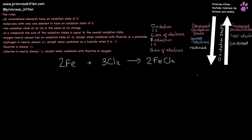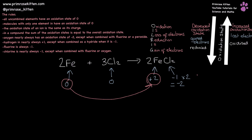Iron on its own is going to have an oxidation state of zero, and chlorine in combination with itself is also going to have an oxidation state of zero. Chlorine over here is minus one and there are two of them giving us minus two overall, making iron plus two. So, you can see that iron has gone from zero to plus two — this has increased its oxidation state, it has lost electrons, it has been oxidised.